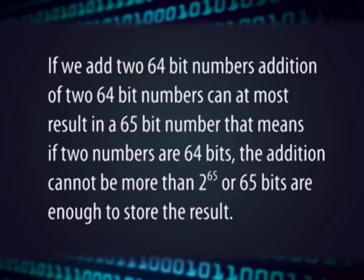That means if two numbers are 64 bits, the addition cannot be more than 2 to the power 65, or 65 bits are enough to store the result. So typically when the addition is performed, the addition of two 64-bit numbers, if it results in a 65th bit, it can result in a carry. For storage of a 64-bit number, we will use 8 byte memory locations each to store the pair of 64-bit numbers, and we will also use 8 byte memory locations for storing the result, as the result will also be stored in a sequence of 8 memory locations.